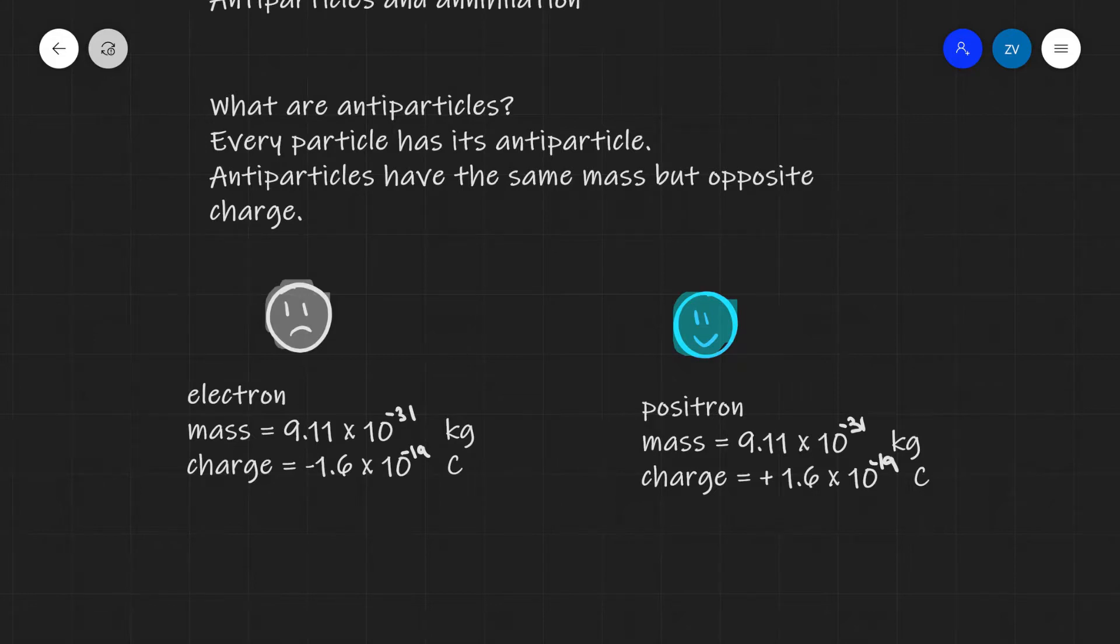A positron is the antiparticle for the electron. It has a mass of 9.11 times 10 to the power of minus 31 kg, which is exactly the same as the rest mass of an electron, and it has an opposite charge, which is plus 1.6 times 10 to the power of minus 19 coulombs.